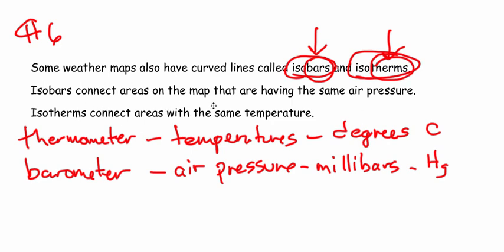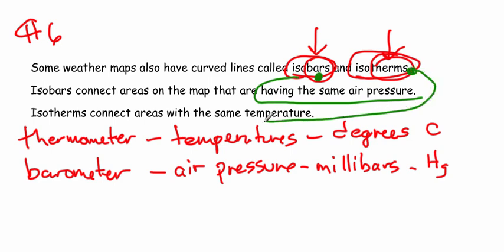Isobars connect areas on the map that have the same air pressure, and isotherms connect areas on a weather map that have the same temperature. Let's take a green marker right now and tag those. Isobars — these are areas that have the same pressure. Isotherms — these are areas that have the same temperature.